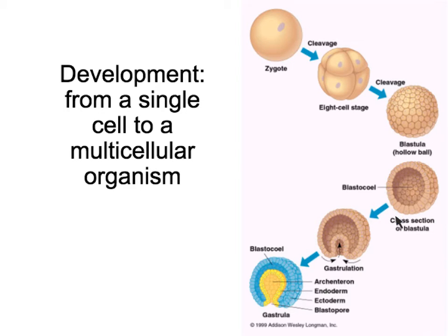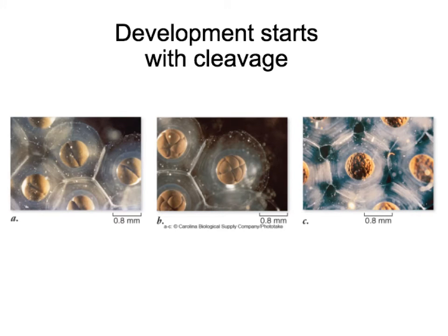It will keep going through the process of development, slowly changing shape and the cells slowly becoming more and more different, so each one starts to specify and specialize in the tissue or the organ it will eventually become. And that's what we're going to study in this unit. Going back to this slide, cleavage is at this point where the zygote first divides. Now we have an eight-cell stage, and we keep going until we have the formation of the blastula, which is a sphere hollow in the center.